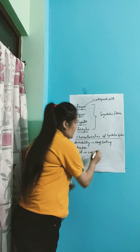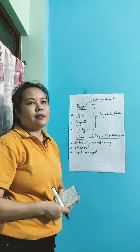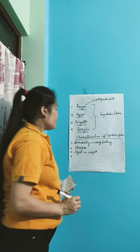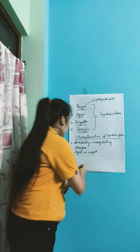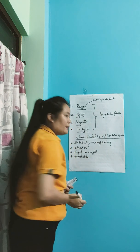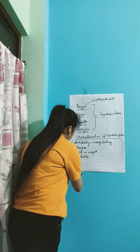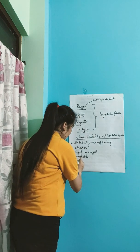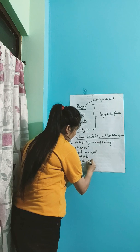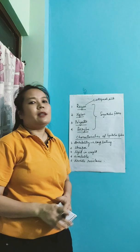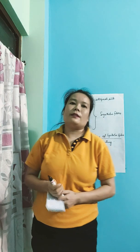The clothes which are made up of synthetic fibers are light, so they are easy to wear. Number four, they are easily available. Number five, they are wrinkle resistant. Wrinkle resistance means they don't have to be ironed again and again — once washed, you can use them directly.